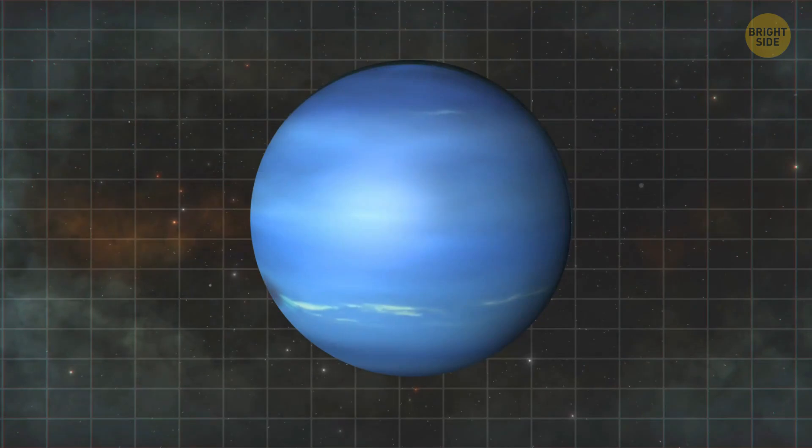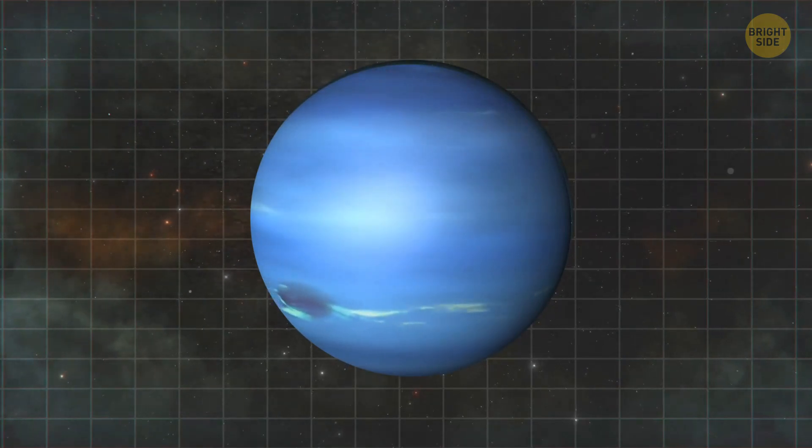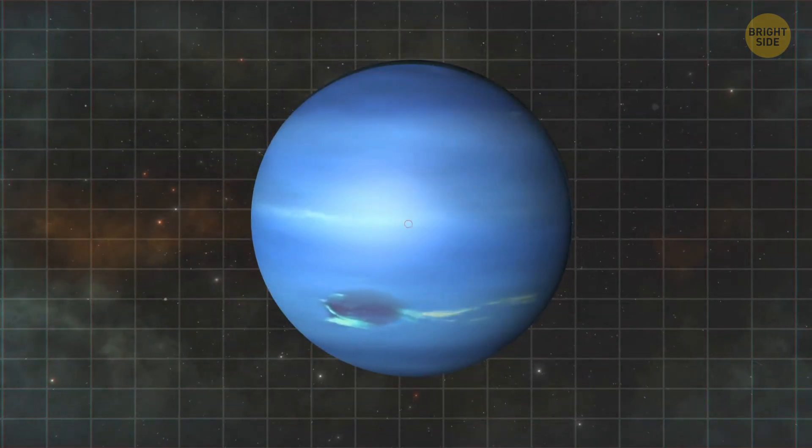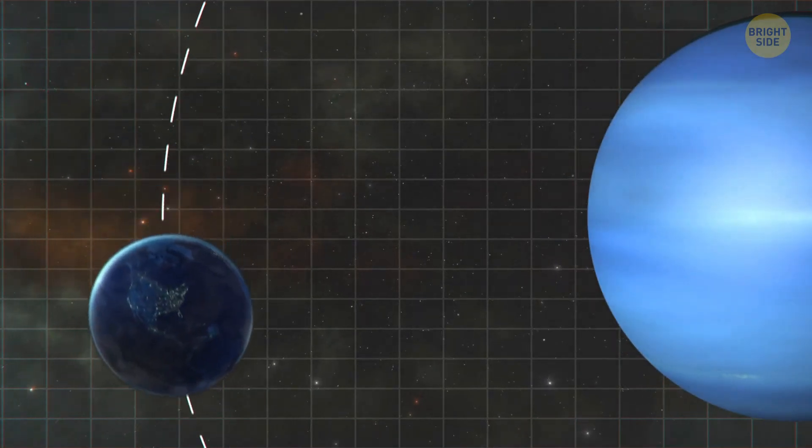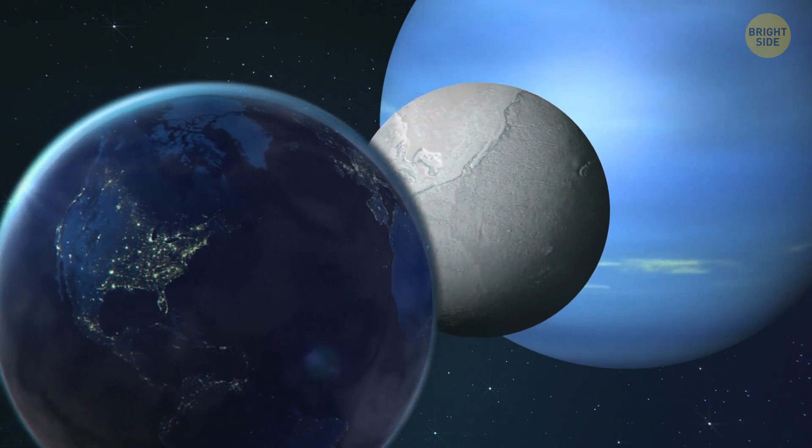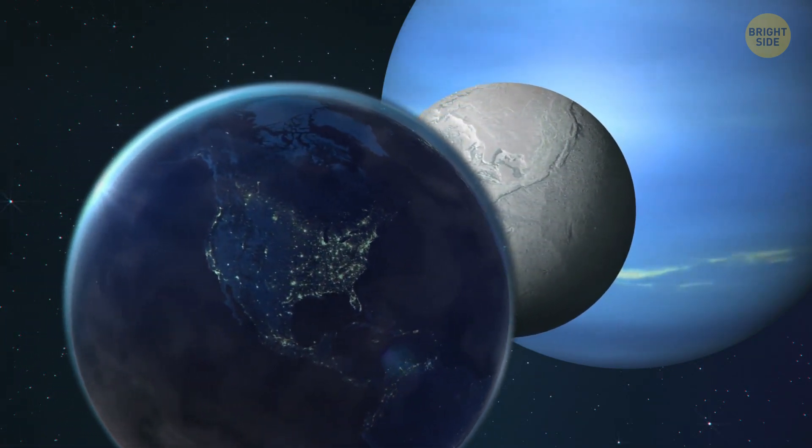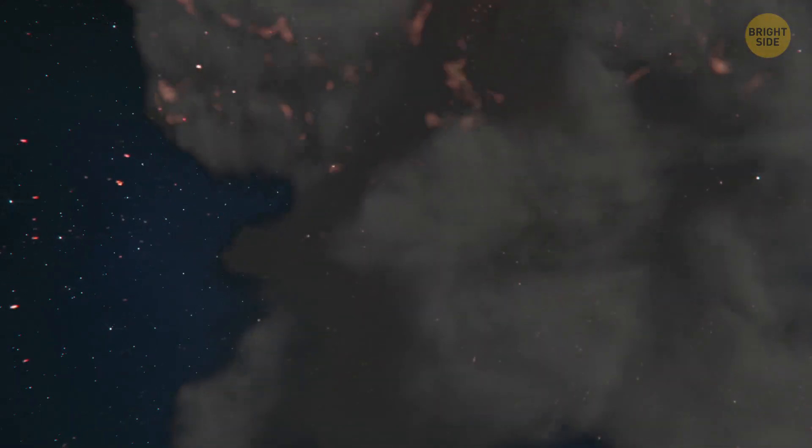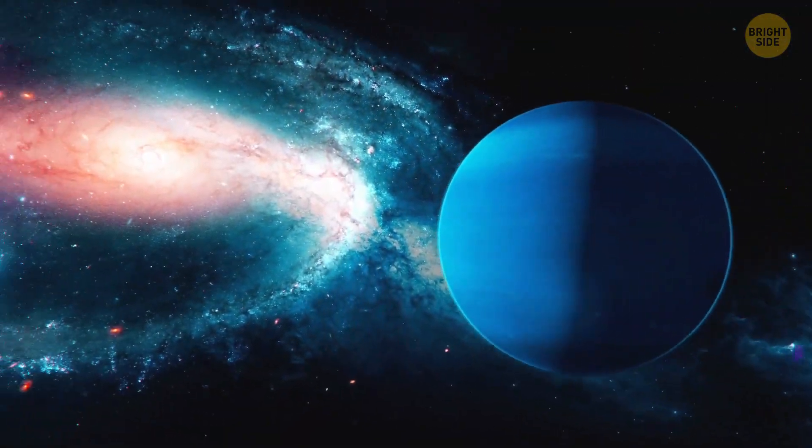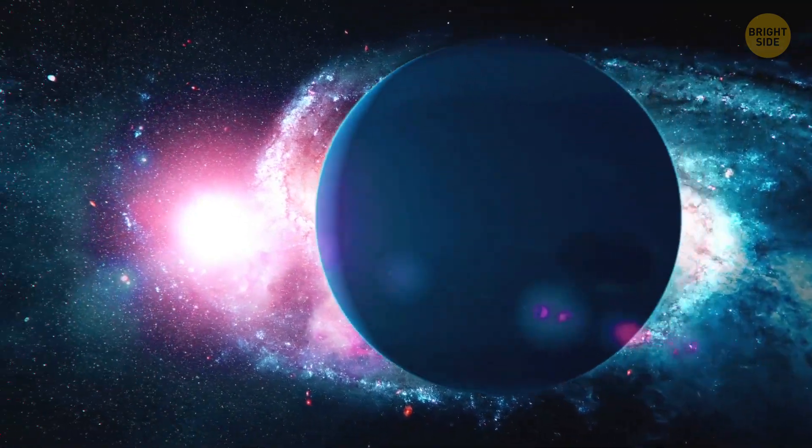Neptune is 17 times the mass of Earth, and its gravitational pull is much stronger. That's why our planet would end up as a satellite. Yep, again. It would orbit Neptune slightly further than its own largest moon, Triton. By the way, there would be a great risk of Earth colliding with this space body. But let's assume we were lucky enough not to cross paths with Neptune satellites.